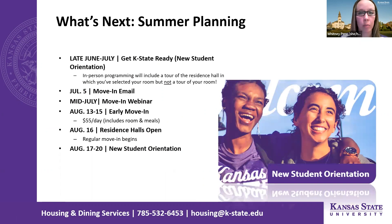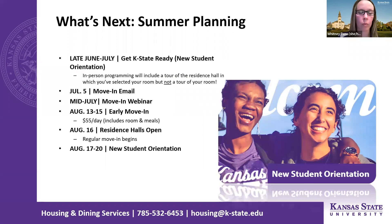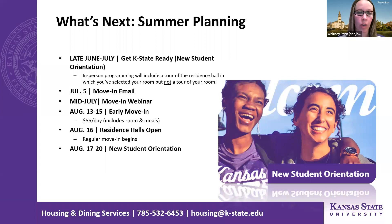For summer planning: in late June through July, there will be 'Get K-State Ready' events as part of new student orientation that you'll need to register for — a variety of in-person and virtual events. If you attend in-person programming, that includes a tour of the residence hall you've selected, though it won't be a tour of your specific room. The next big communication from us after room selection will be on July 5th — we'll send an email about move-in with lots of information including how to sign up for a move-in appointment.